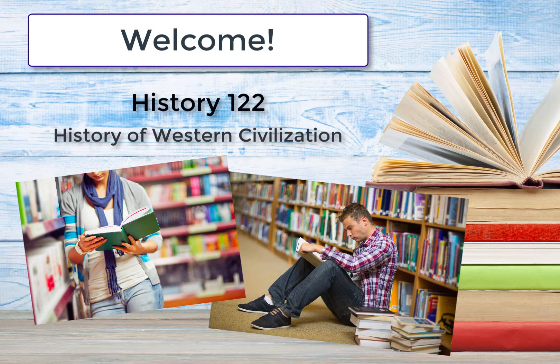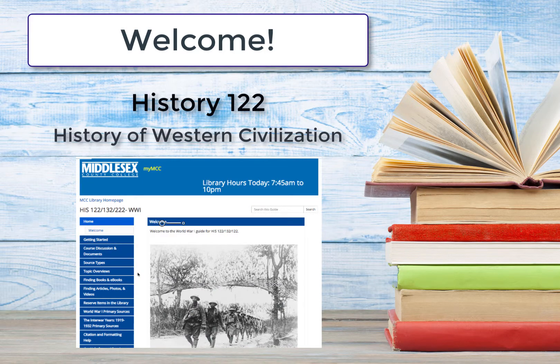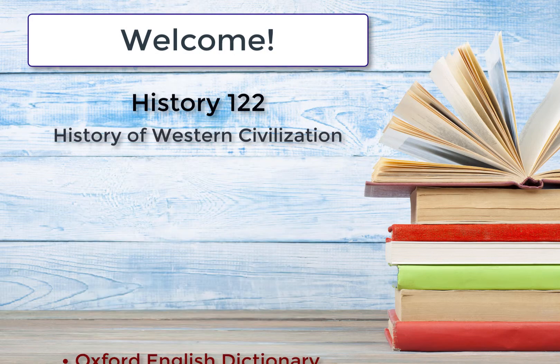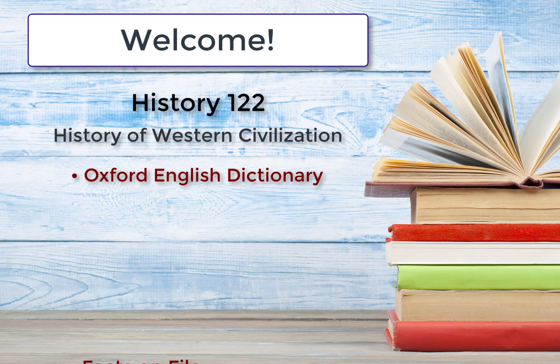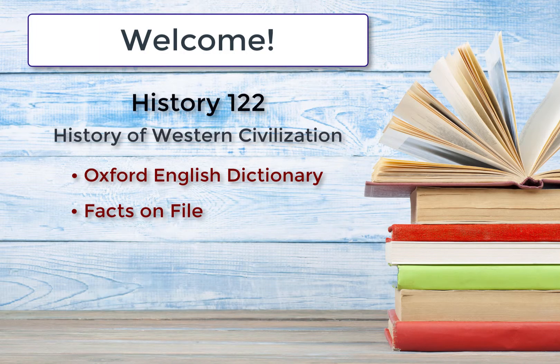To make your transition from using the open web and Google to a library database easier, our librarians have built a World War I Library Guide that highlights the many resources we will share in our videos as well as others that cover historical topics. We will begin by using Oxford English Dictionary and Facts on File, which will help you get situated with your topic, understanding the language, finding keywords, and getting an overview of the topic itself.